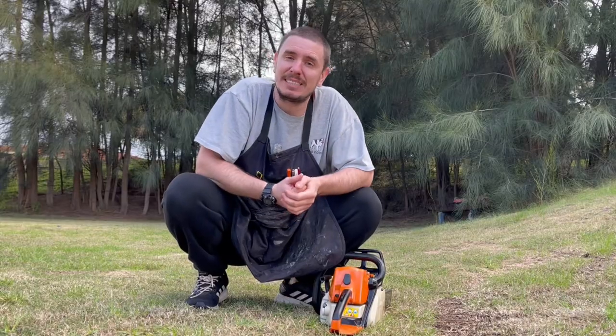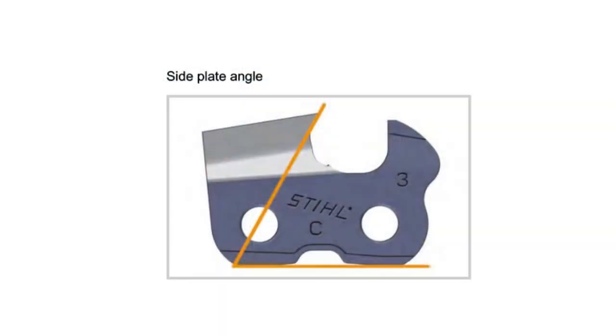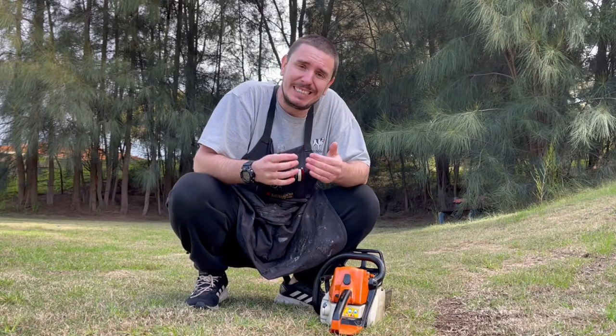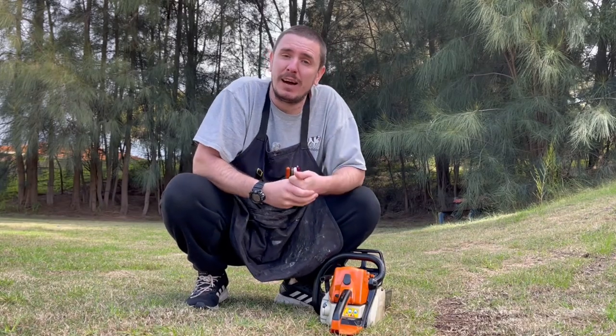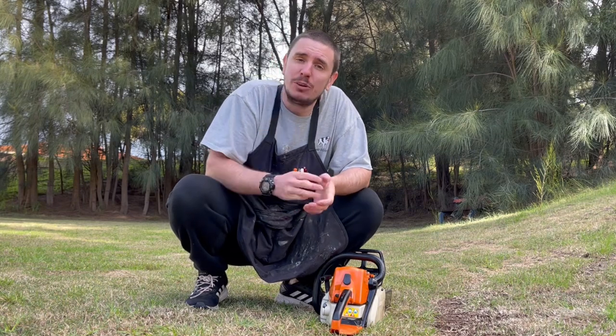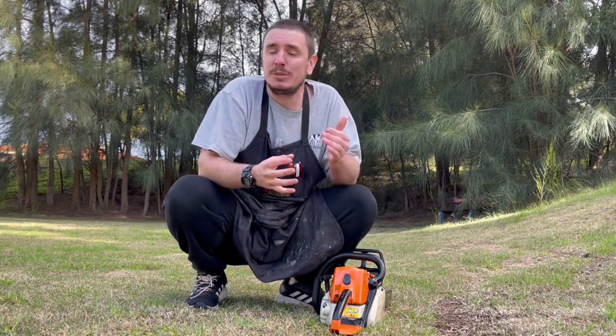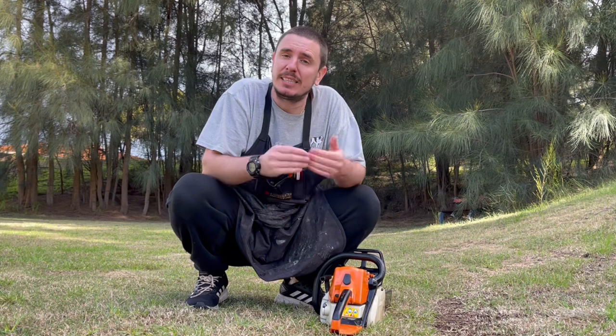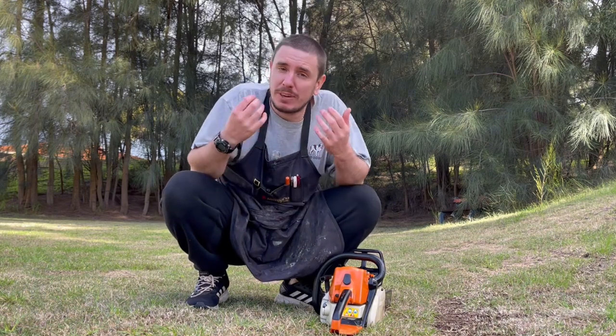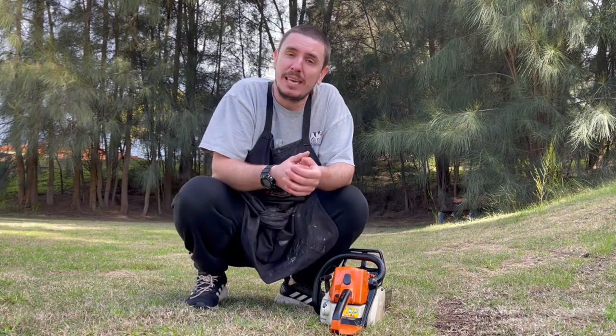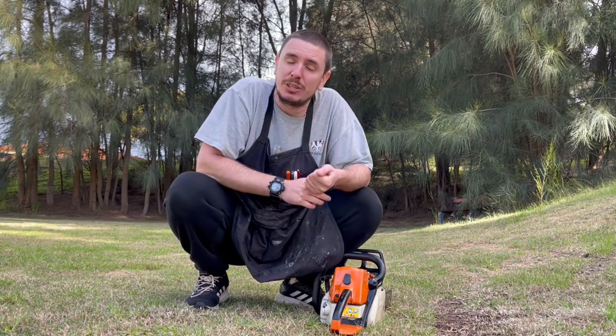The guides generally rest on the tooth and the depth gauge sitting in front of it, and you'll find that it makes the process much easier, especially if you're just starting out. And then lastly, our side plate angle. Typically this is shown from the outside of the tooth in most literature, but it's actually easier to see what you're filing from the inside of the tooth. These three angles work together, and it does depend on the species you're cutting, the type of wood, and the type of cut to ensure that you get the best result and the most longevity out of that tooth.